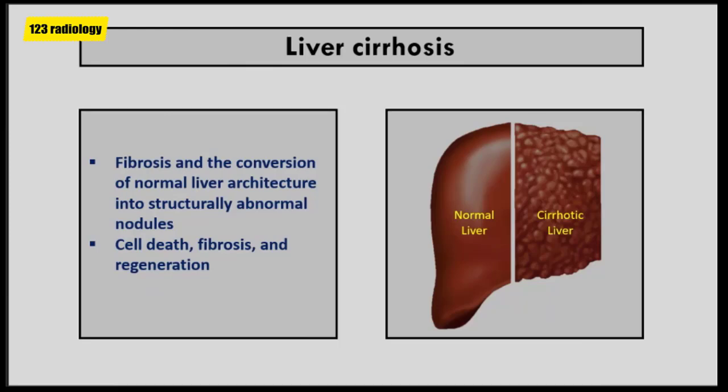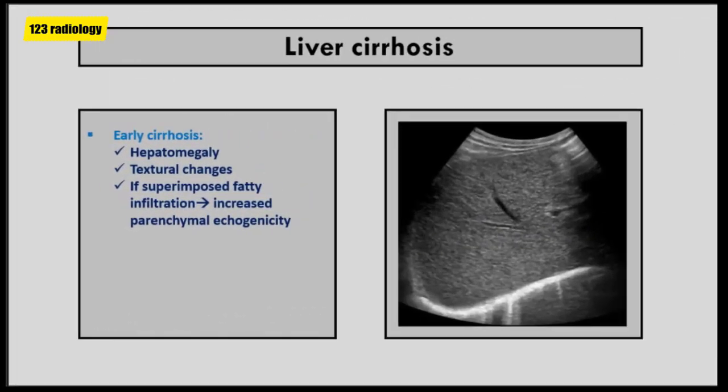Let's discuss ultrasound features of liver cirrhosis. Liver cirrhosis is a diffuse process characterized by fibrosis and the conversion of normal liver architecture into structurally abnormal nodules. Three pathologic processes lead to cirrhosis: cell death, fibrosis, and regeneration. The sonographic features of cirrhosis vary during the course of the disease. Early cirrhotic changes include hepatomegaly and possible textural changes, though these are nonspecific and unreliable in detecting early histologic changes. With superimposed fatty infiltration, parenchymal echogenicity increases compared to the normal renal cortex.